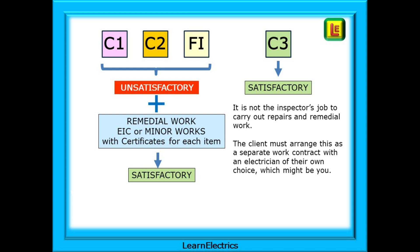There is no need for you to carry out another inspection. Your obligations were complete when you issued the original EICR and your invoice. Having said that, it often happens that you are asked to complete the remedial work. The C3 code is used where your observations show minor deviations from the current regulations, or items that, although not dangerous, would benefit from some attention. C3s only on an EICR will leave the report as satisfactory.